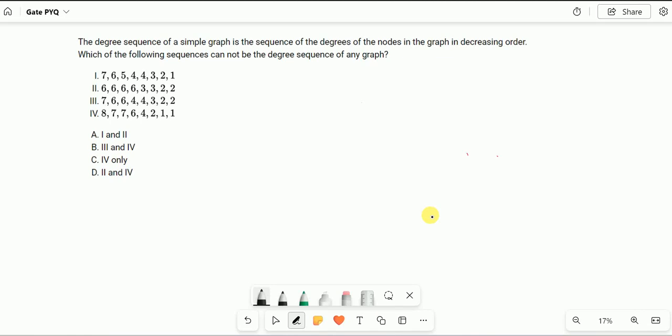The degree sequence of a simple graph is the sequence of degrees of nodes in the graph in decreasing order. Which of the following sequences cannot be a degree sequence of any graph? I will take the first and second example.